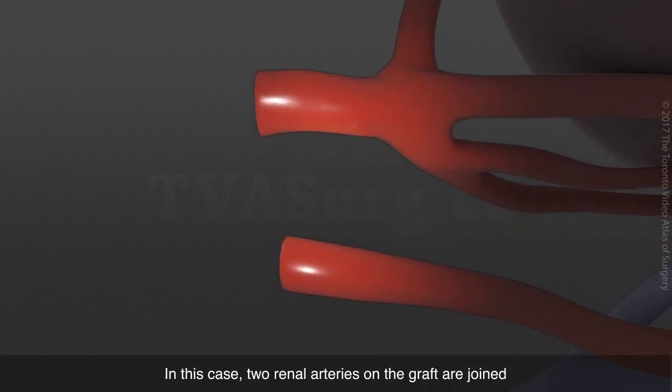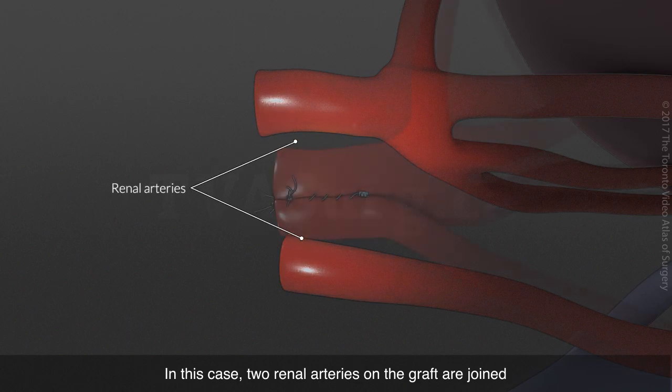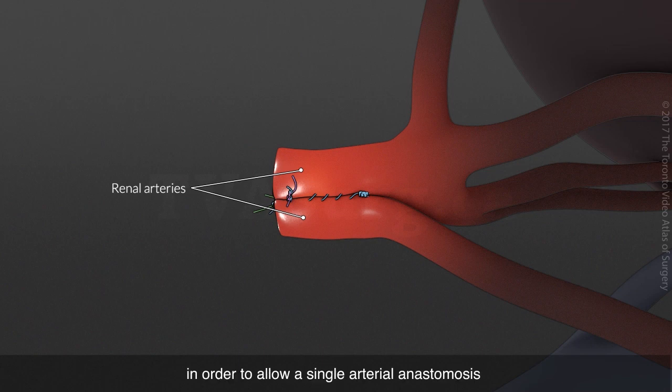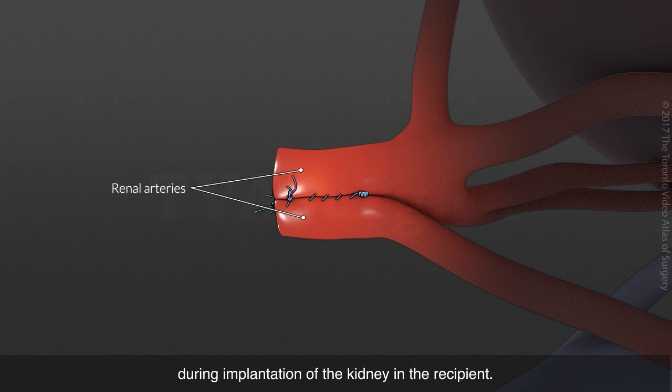In this case, two renal arteries on the graft are joined via a side-to-side arterioplasty technique, in order to allow a single arterial anastomosis during implantation of the kidney in the recipient.